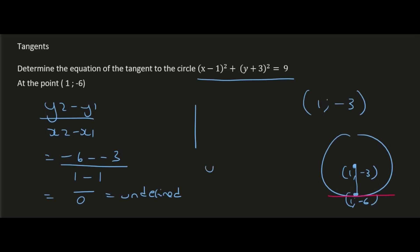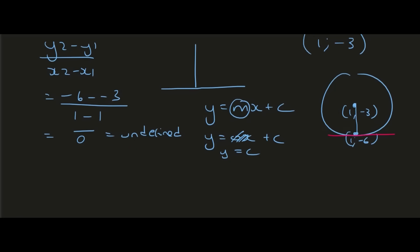Since the radius is completely vertical, the tangent must be completely horizontal, so its gradient is 0. Since 0x is nothing, we just have y = c. Plug in the point on the tangent — the y value is -6. We don't need to worry about the x value because there's no x term. So c = -6, and the final equation for that tangent is y = -6.